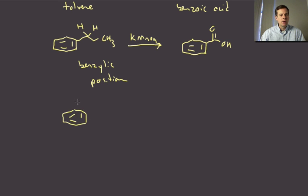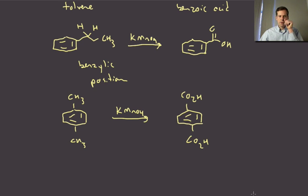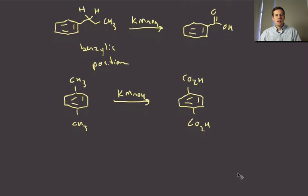So just to drive this home let me show you another example so here's one where I'm going to have two methyl groups and if I treat this with KMnO4 I will get out two carboxylic acids. Okay so that works as well and you could have six alkyl groups and they all could be oxidized in this way.